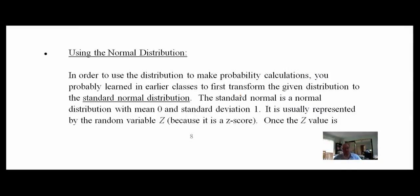You may have taken a stats class before where you tried to find the probability of something in a normal distribution. The traditional way is to find a z-score: x minus the mean, divided by the standard deviation. The z-score tells you how far a point is from the mean in terms of standard deviations — it can be negative or positive. What this does is standardize any point into a normal distribution with mean zero and standard deviation one.